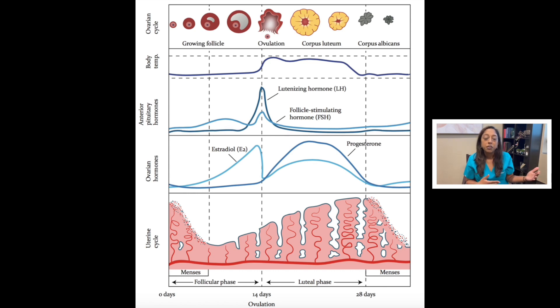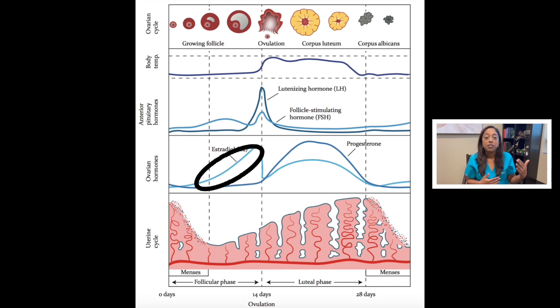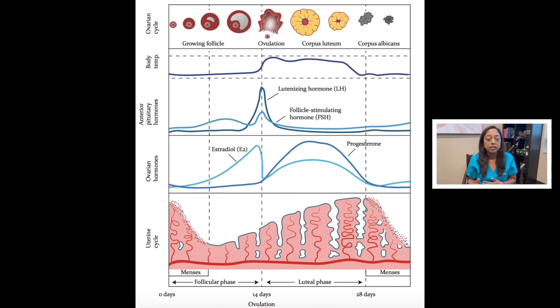Starting with the follicular phase, the follicle is growing and the microscopic egg within it is maturing. The follicle is also making estrogen, and that estrogen is thickening the uterine lining and preparing it for later implantation.